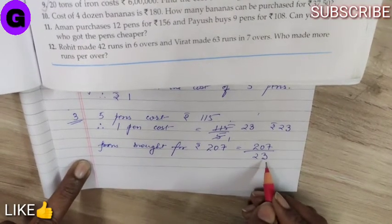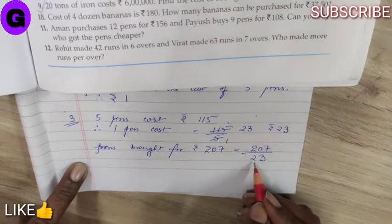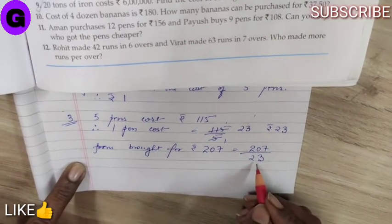Now, since 23 is a prime number, it is not divisible by any other number. So, we have to divide 207 by 23 itself.